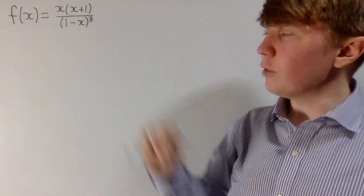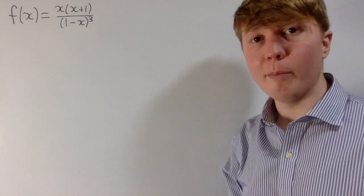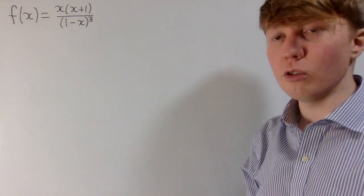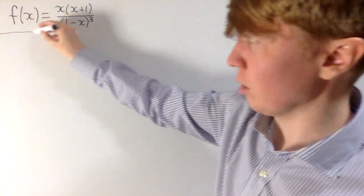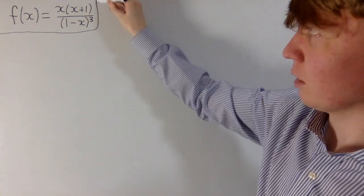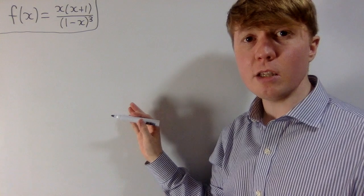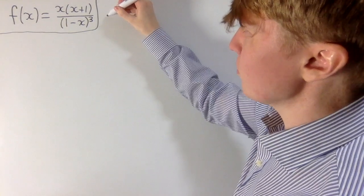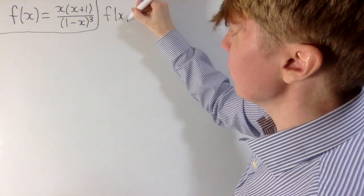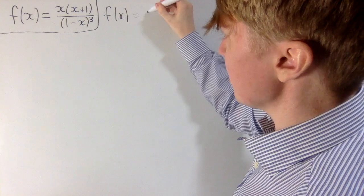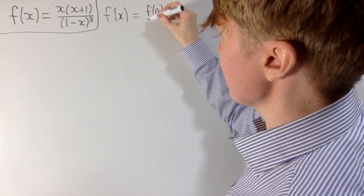We're going to have a look at this function f of x = x(x+1)/(1-x)³. This is a really interesting function, although it might not look like it at the moment. What's interesting about this function f is actually its Maclaurin series expansion, which is basically its Taylor series expansion at point 0.